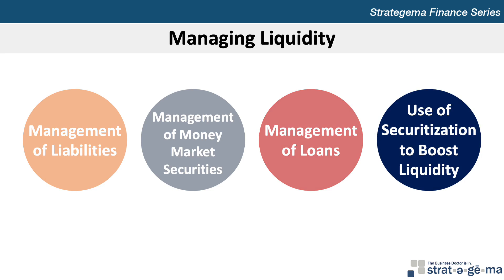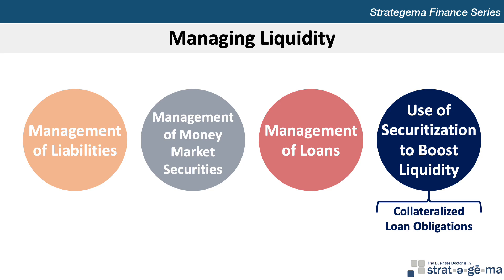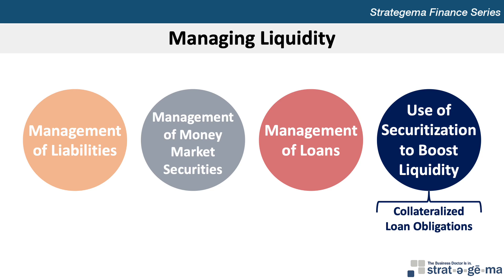The process of securitization commonly involves the sale of assets by the bank to a trustee, who issues securities that are collateralized by the assets. Commercial banks can obtain funds by packaging their commercial loans with those of other financial institutions as collateralized loan obligations, or CLOs, and then selling securities that represent ownership of these loans.